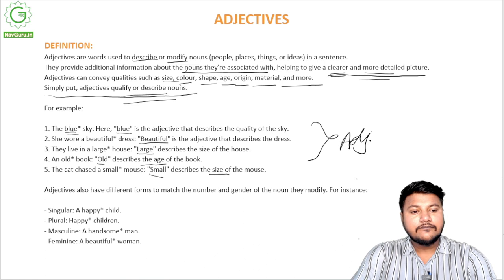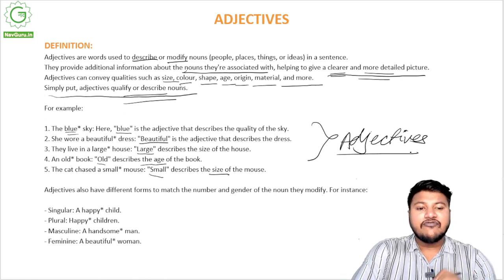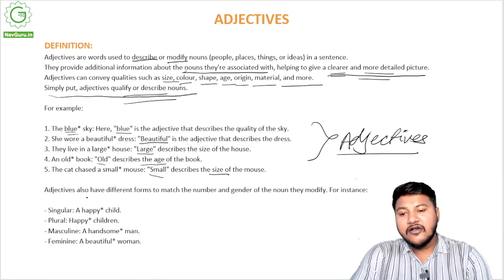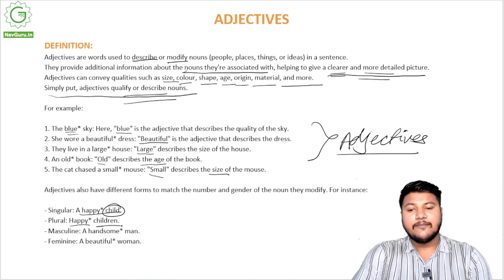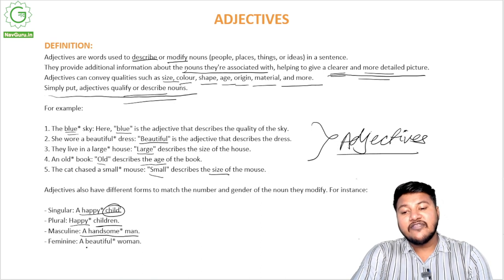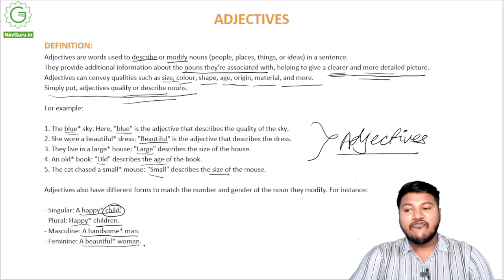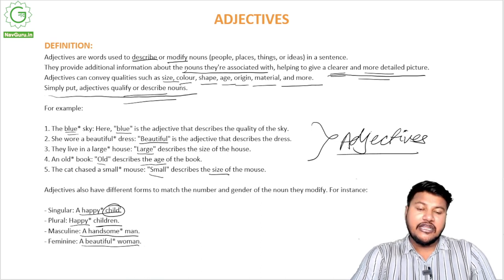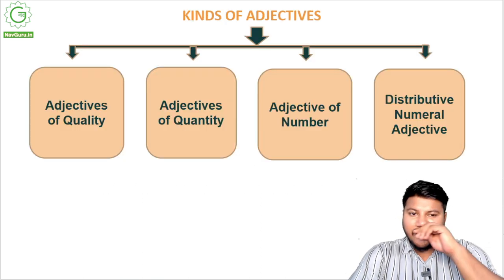Adjectives also have different forms to match the number and gender of the noun they modify. For instance, in singular number we say 'a happy child,' but in plural we say 'happy children.' For masculine gender we say 'a handsome man,' and for feminine gender we say 'a beautiful woman.' So adjectives are modified to suit the number or gender of the noun they are used with.